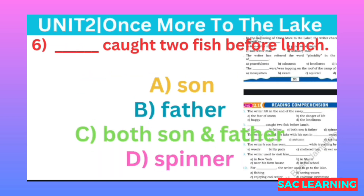Number six: Who caught two fish before lunch? (Kisne dopahar ke khaane se pehle do machhliyan pakdi?) Option A: son, B: father, C: both son and father, D: spinner. Correct option is C, both son and father.